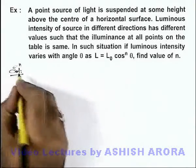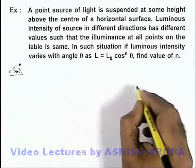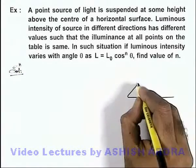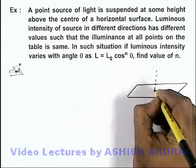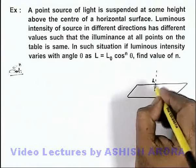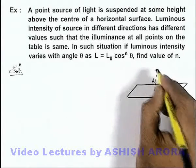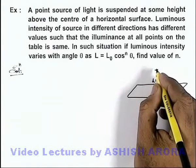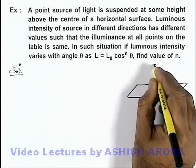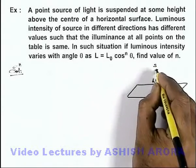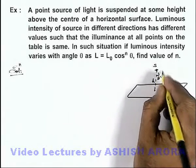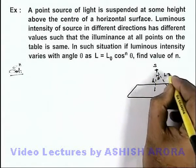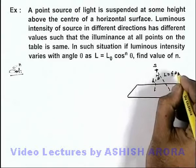First we analyze the situation. This is a horizontal surface, and we are given that at a height h above the horizontal surface we have placed a point source of light. For this source, if we consider a direction at an angle theta from the vertical direction, luminous intensity is given as L, which is a function of theta.